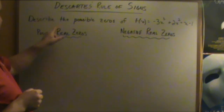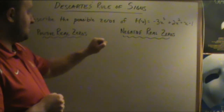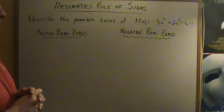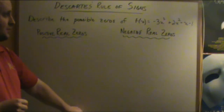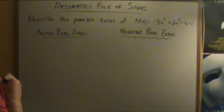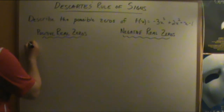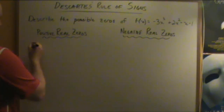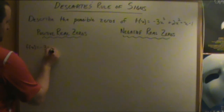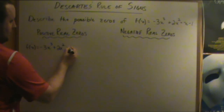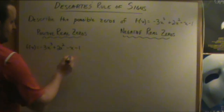So to start, let's look at this example here: describe the possible zeros of the function f of x equals negative 3x cubed plus 2x squared minus x minus 1. So if we rewrite it over here — I'm going to use a different color — f of x equals negative 3x cubed plus 2x squared minus x minus 1.